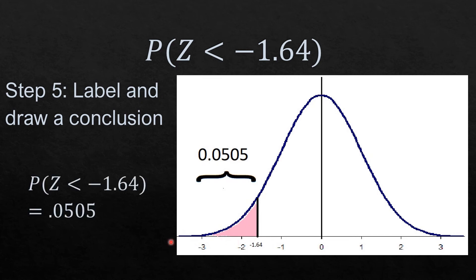In symbol, the probability that Z is less than negative 1.64 is equal to 0.0505. That will be all for the first example.